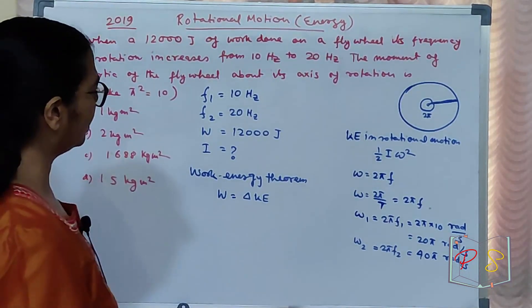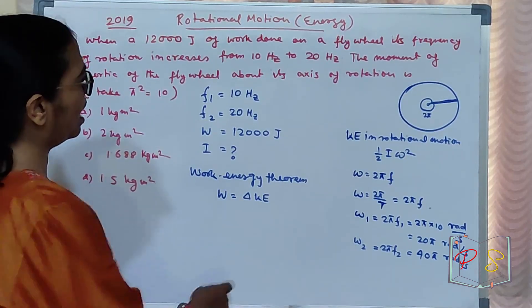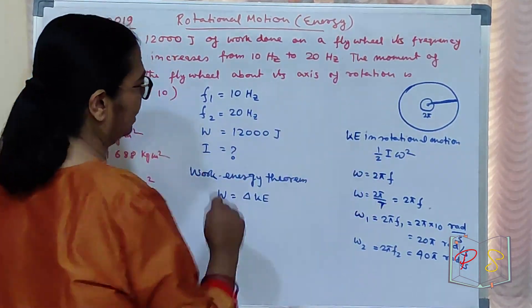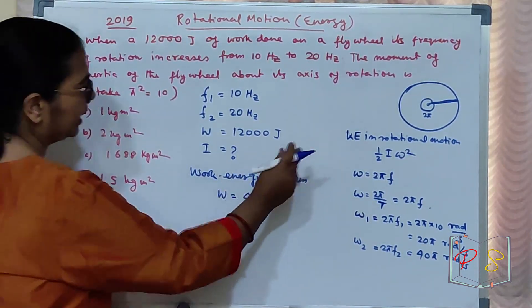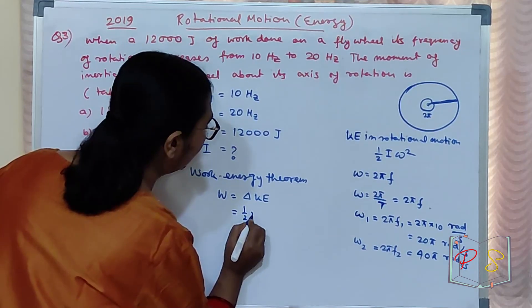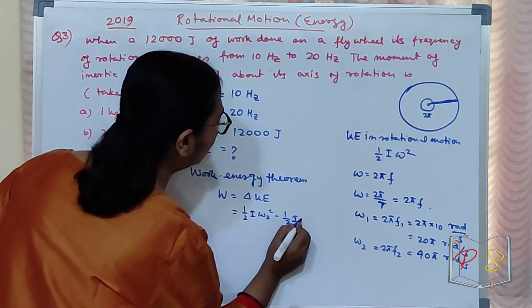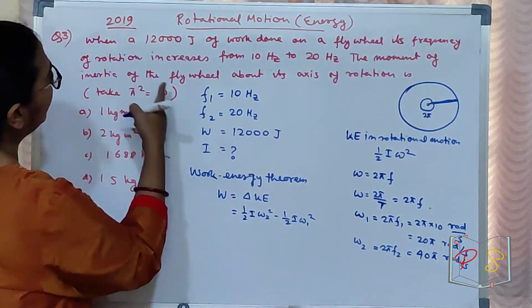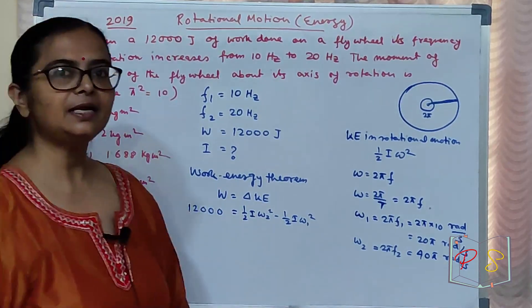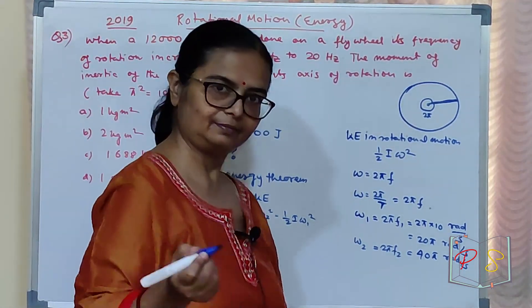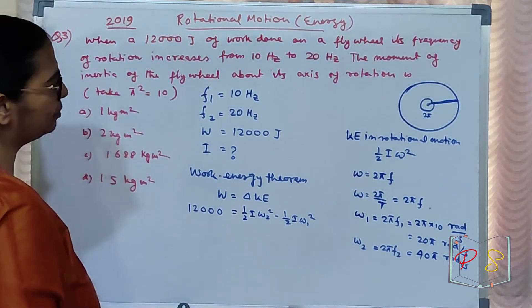Abhi aapko ye wala kam karna hai. Work? Acha. Kinetic energy abhi. Half I omega square. Omega mil gaya, I nikalna hai. Toh change of kinetic energy idhar likho. Toh mein aise likho. Half I omega 2 square minus half I omega 1 square. Yeh kya de diya? Work. 12000. Idhar se mera I nikal jayega. Karlo? Fata fata karlo? I nikalna hai tumko?